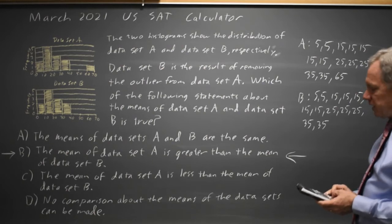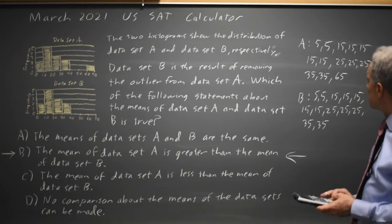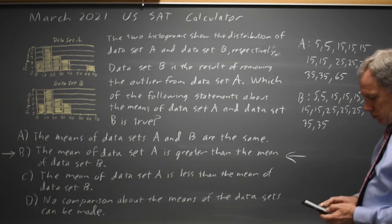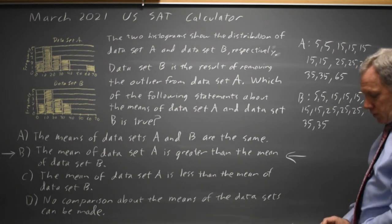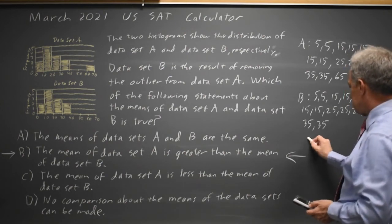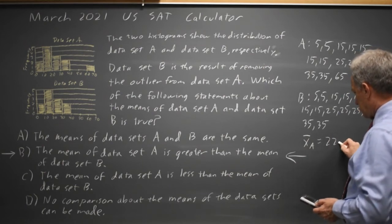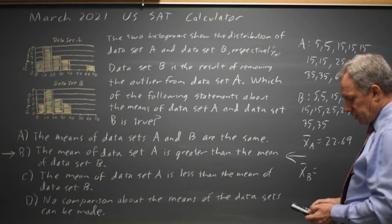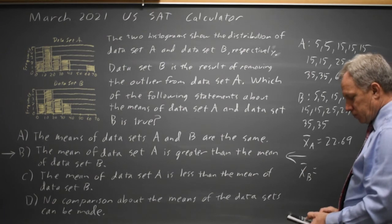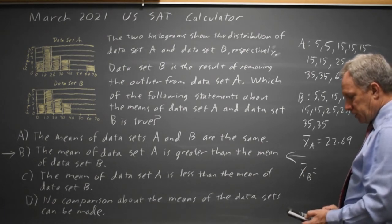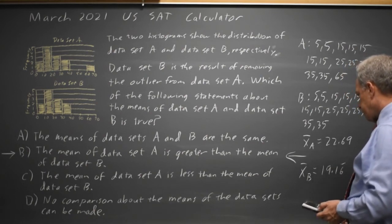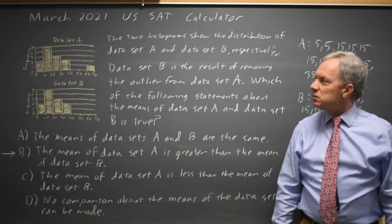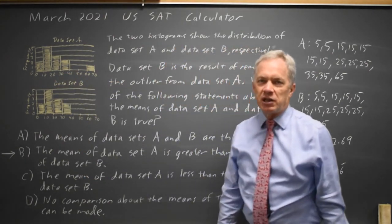I'm going to use a graphing calculator and enter data set A into list 1. The mean is 22.69. If I go back to my stat list and remove the largest observation, the 65, the new mean is 19.16. The mean of data set A is greater than the mean of data set B. For any values you make up for the data set entries in each interval, the mean of A will be greater than the mean for B.